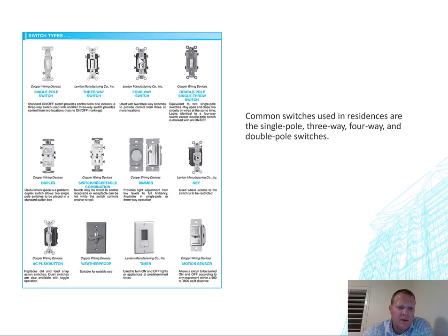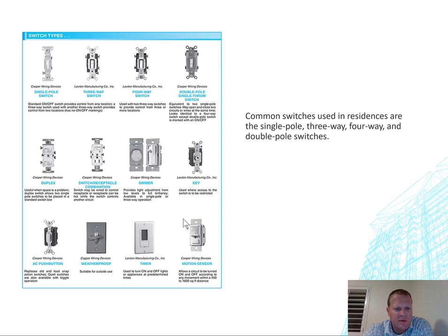Double pole switches as well. I still don't have four-way switching completely figured out in my head. I know how three-way switching works well, but four-way and double pole with all four — I'm not sure. We've also got the idea of a duplex switch, a switch plus an outlet, motion sensor or timer, a lock or keyed switch — all kinds of different switches. There are lots of different kinds, which is pretty obvious.